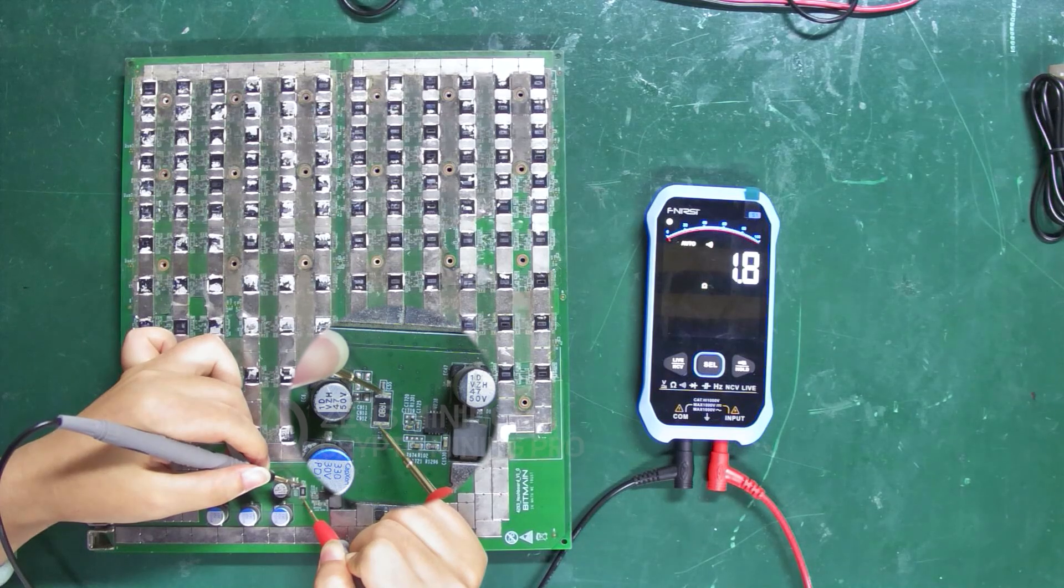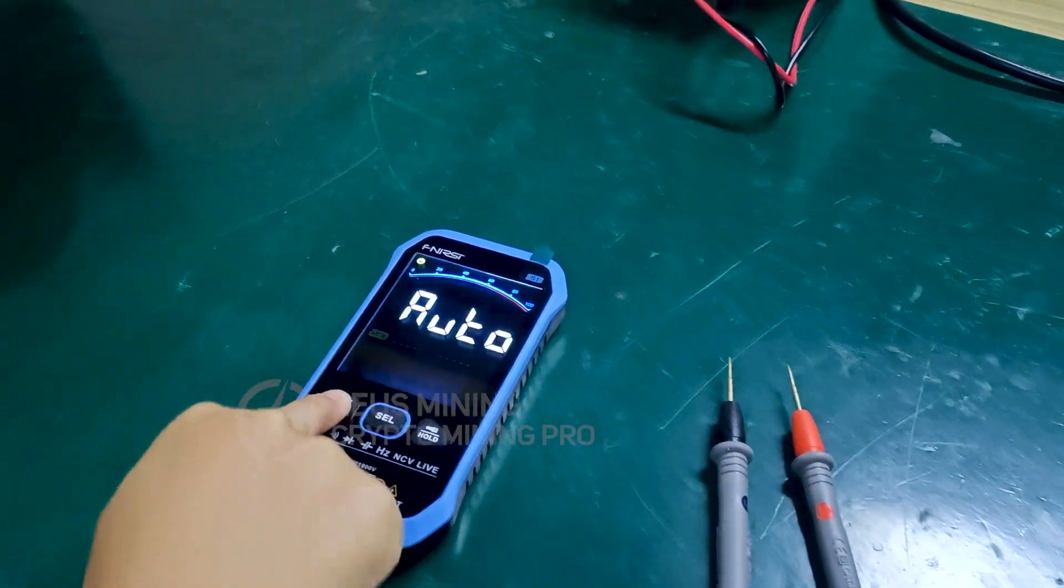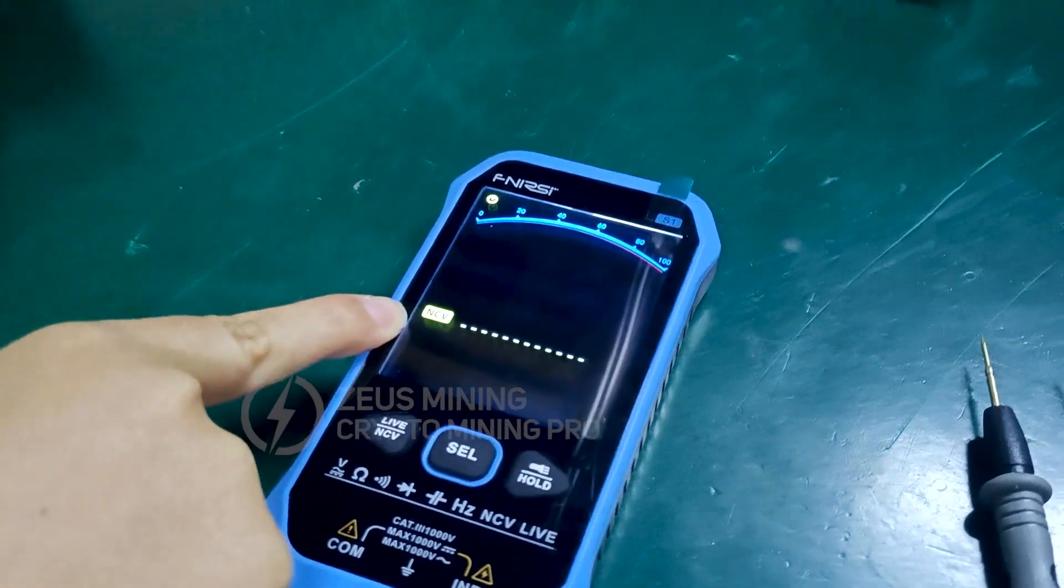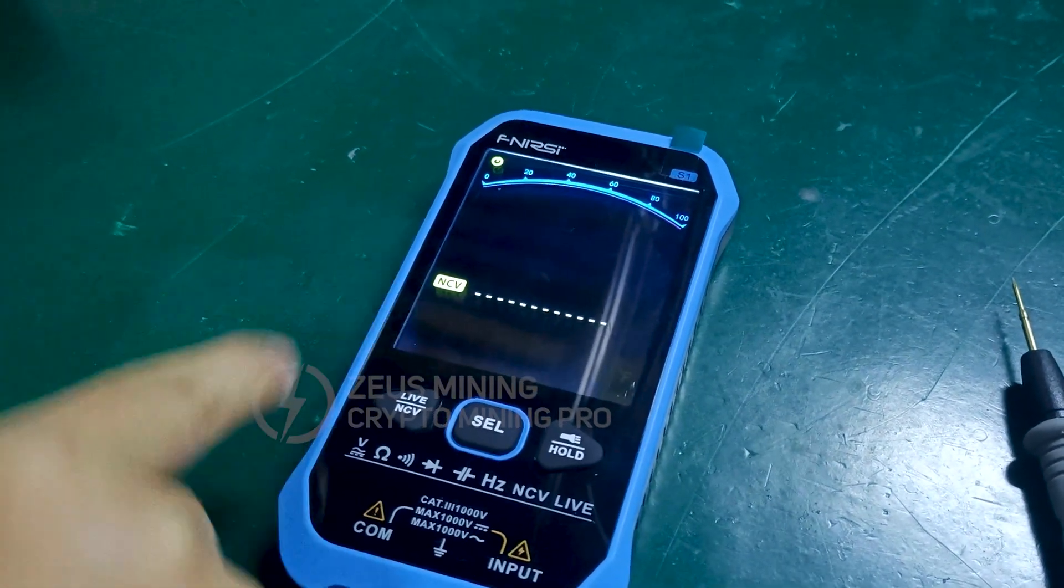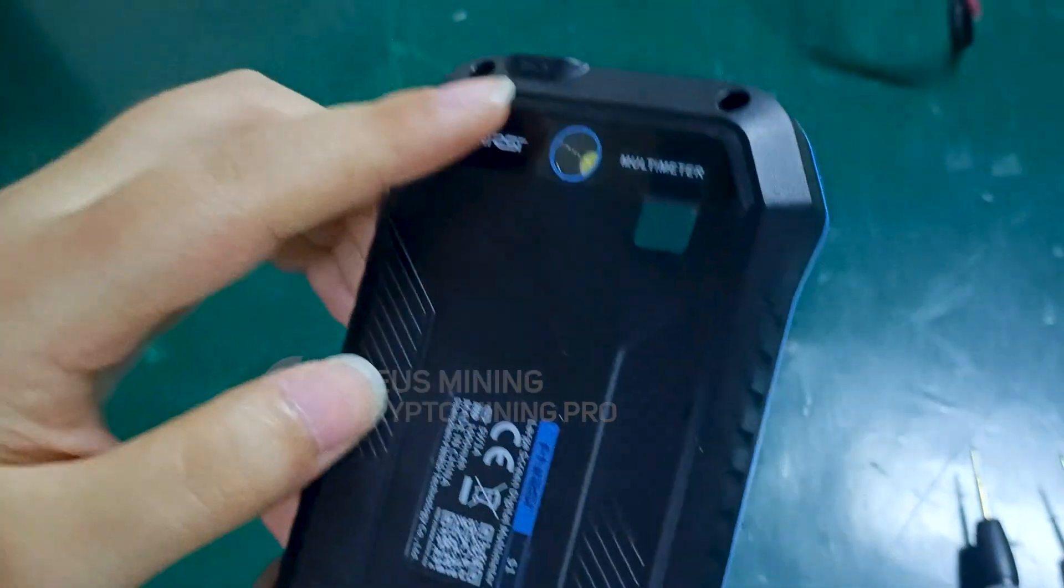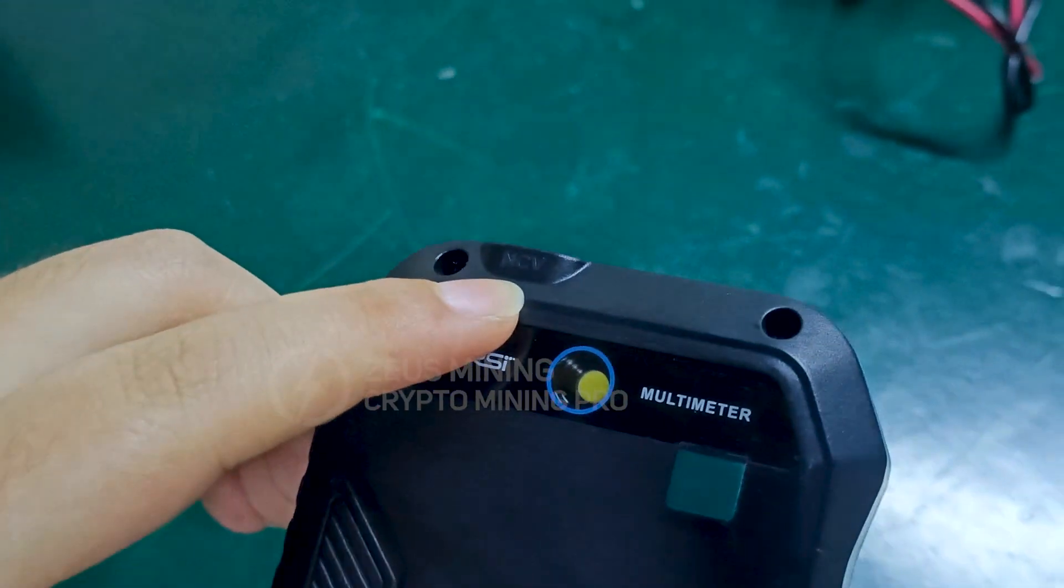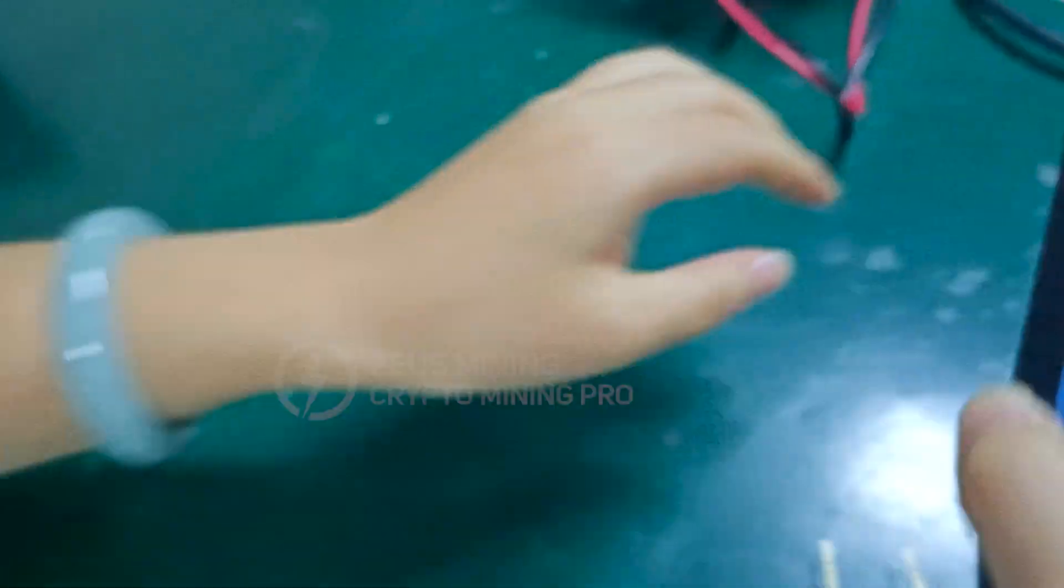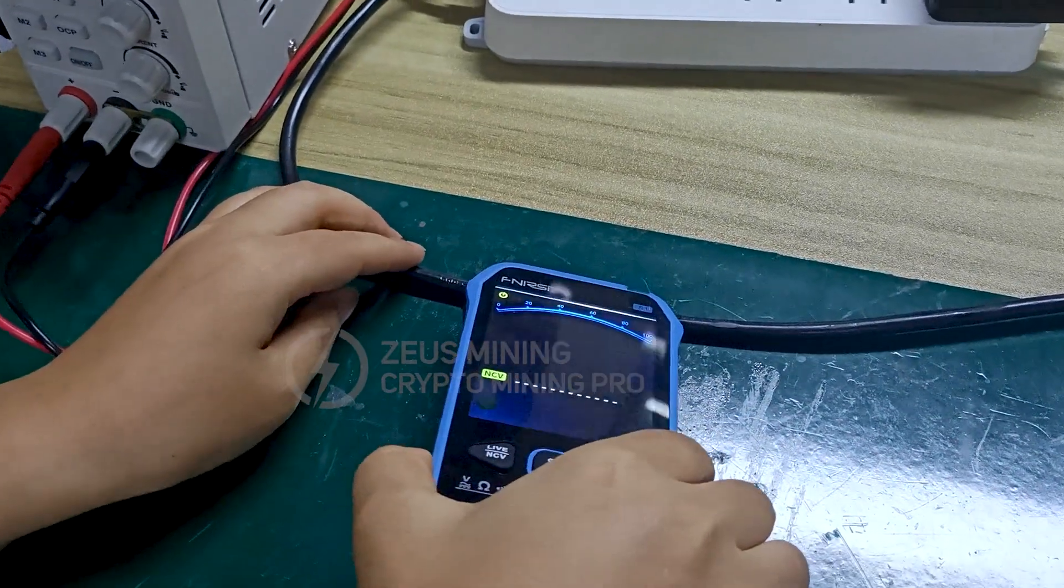When we press this left button, NCV will appear on the screen and it can sense voltage. There's an NCV detection point here on the multimeter. Let's test it. Place it above this power cord and move along the cable.